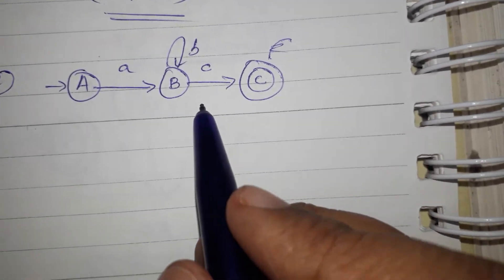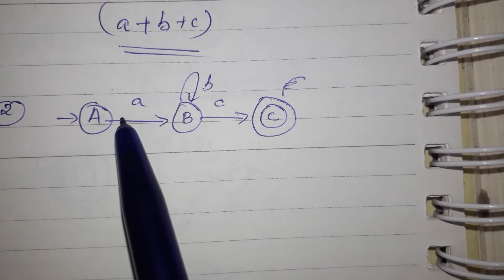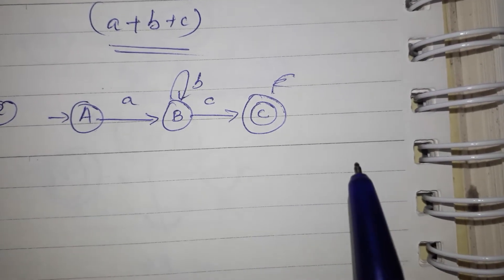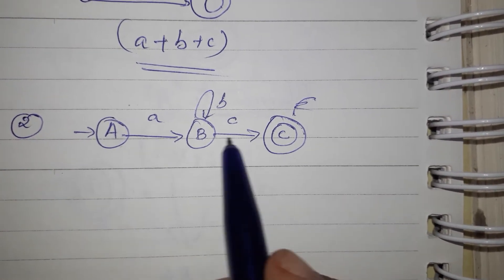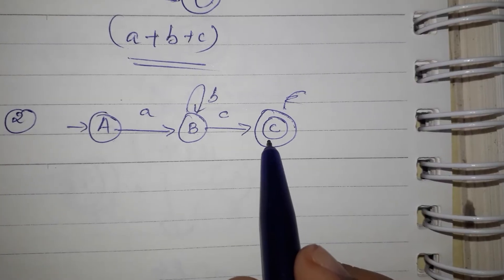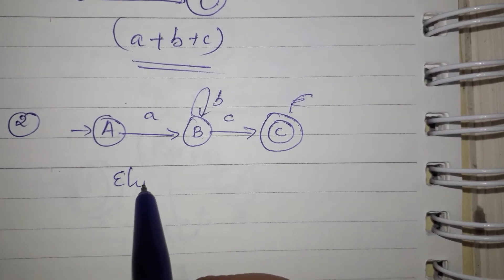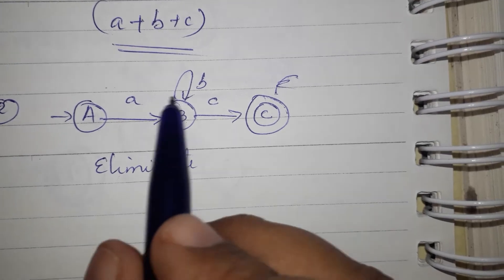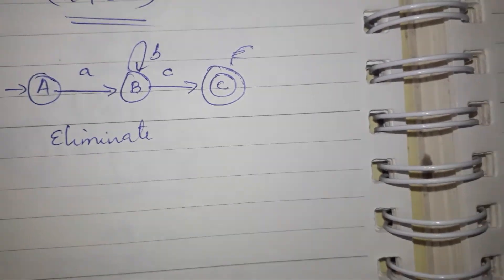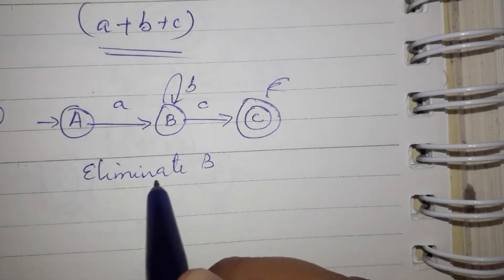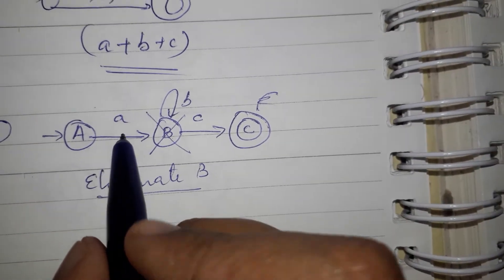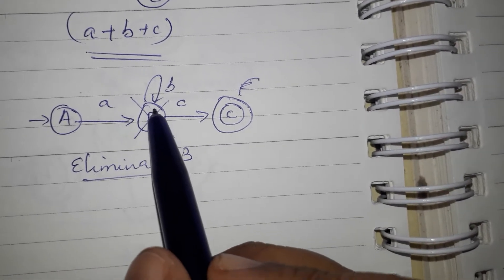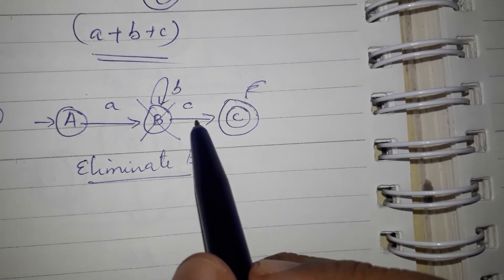Now we have to convert the corresponding automaton to a regular expression. In the starting state we have the incoming edge, and in the final state we have the outgoing edge. We have to eliminate states. I will eliminate the first block, then the second block. To eliminate the second block, it will take effect and bring the other path. Let's do this block — if we have B eliminated, we have eliminated the state. We have incoming and outgoing. Then A, followed by many number of B's, and it is followed by C.